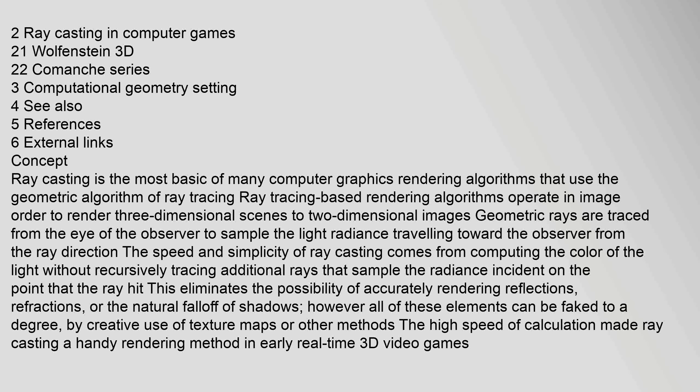This eliminates the possibility of accurately rendering reflections, refractions, or the natural falloff of shadows. However, all of these elements can be faked to a degree by creative use of texture maps or other methods. The high speed of calculation made ray casting a handy rendering method in early real-time 3D video games.